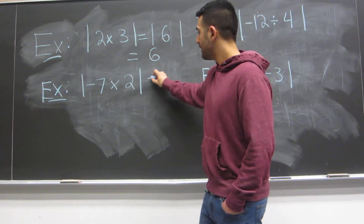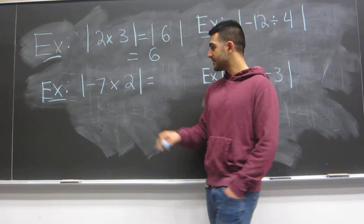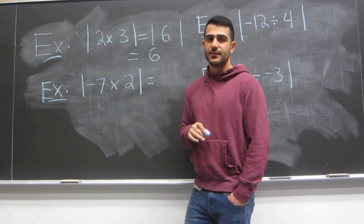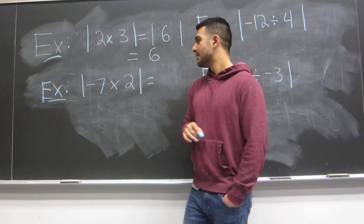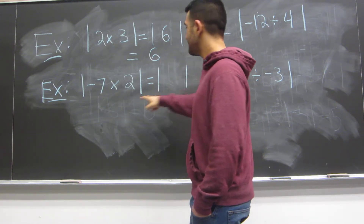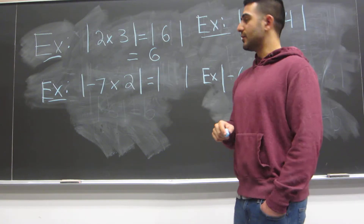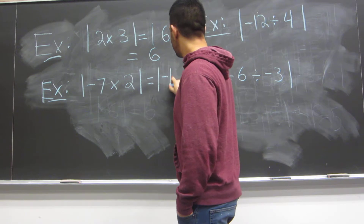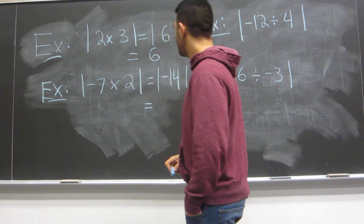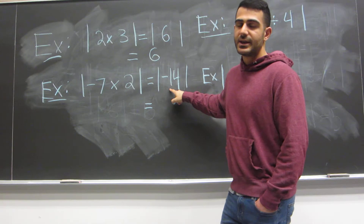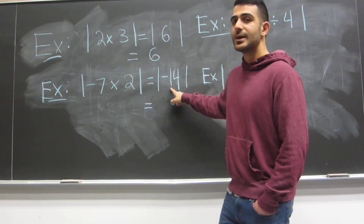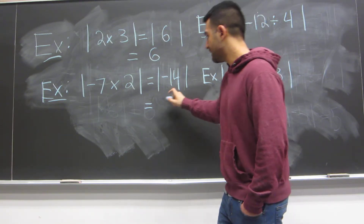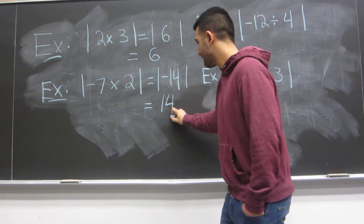Let's look at the next example. We have the absolute value of negative 7 times 2. We can simplify: negative 7 times 2 is negative 14. We can't simplify any further, so now we take the absolute value of negative 14, which is 14. That's the final answer.